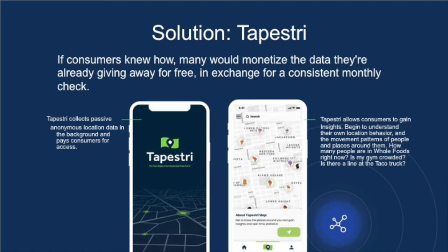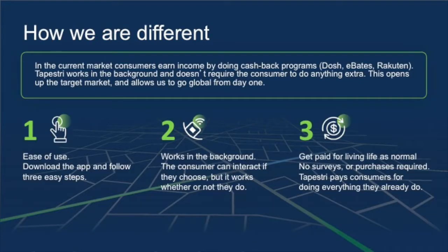We aim to be the solution to that problem. With Tapestry, our free app that monetizes your data and pays you for it. We also have an affiliate marketing arm. This is a free product where users earn for doing nothing. Residual revenue every month can be earned by users and affiliates who share the Tapestry app. Simply put, it's a free app you download and activate to earn.